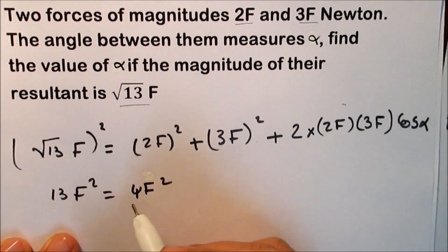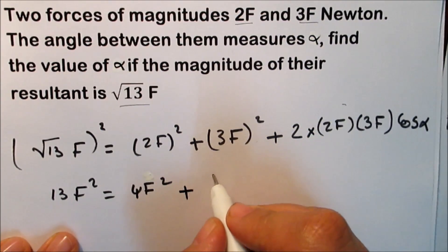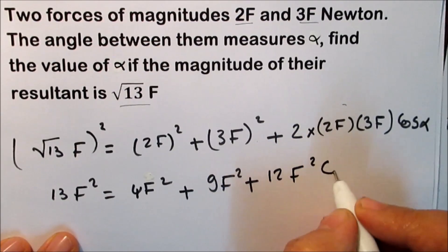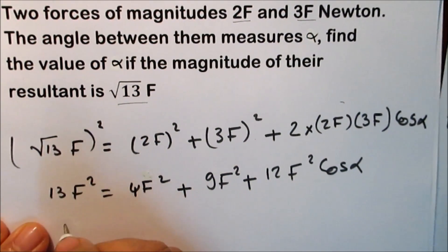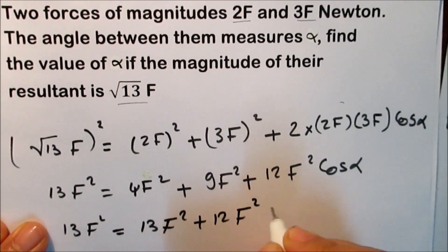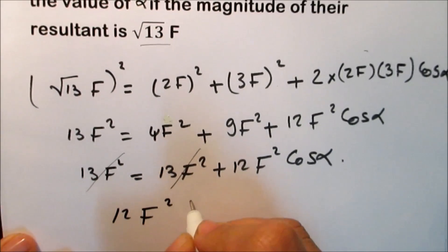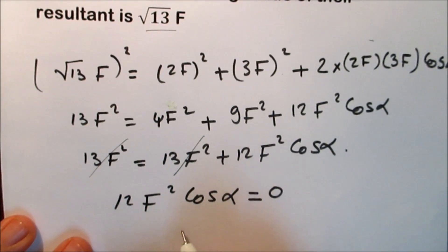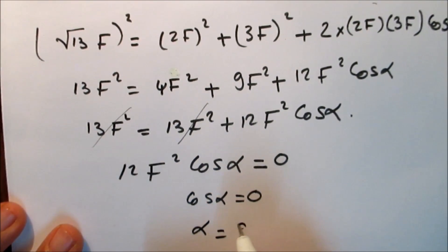Substituting: 13f² = (2f)² + (3f)² + 2·(2f)·(3f)·cos α = 4f² + 9f² + 12f²·cos α = 13f² + 12f²·cos α. The 13f² terms cancel each other, so 12f²·cos α = 0. Therefore, cos α = 0, and alpha is a right angle — alpha equals 90°.